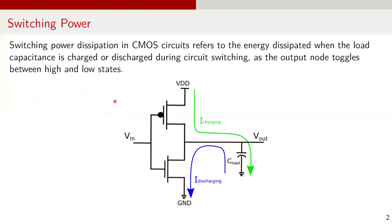Let's look at switching power in detail. Switching power dissipation in CMOS circuits refers to the energy dissipated when the load capacitance is charged or discharged during circuit switching as the output node toggles between high and low states. In this picture, we have an inverter circuit with an input signal VIN and output signal Vout.